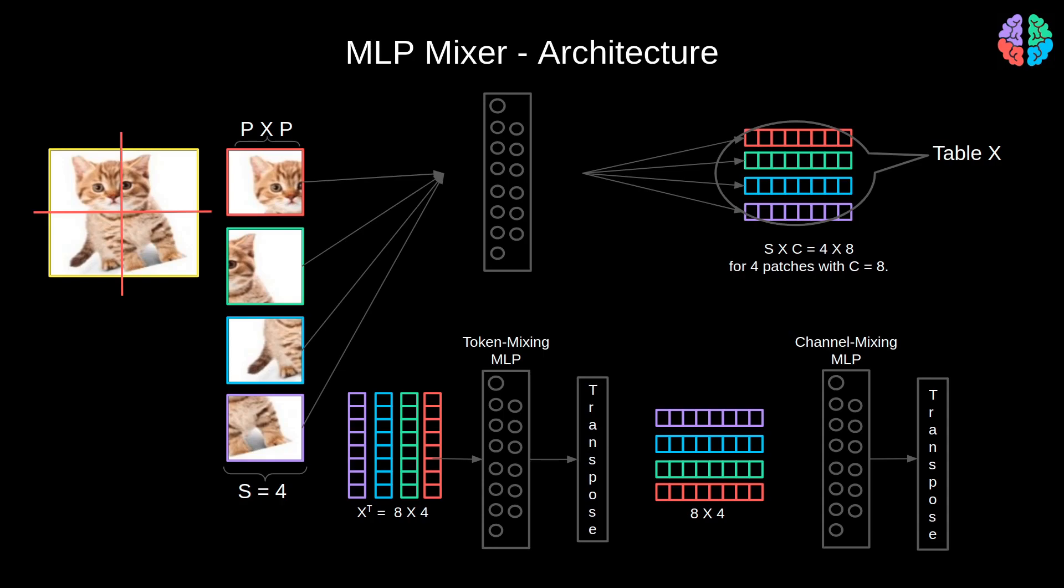To keep things simple, the output of these two token mixing and channel mixing MLPs is the same dimension as the input. For example, if we give an input of 8x4, the output will also be 8x4.